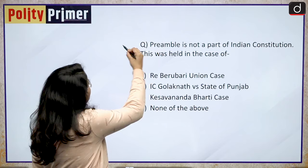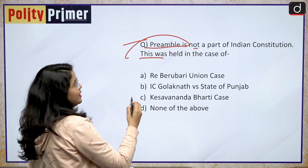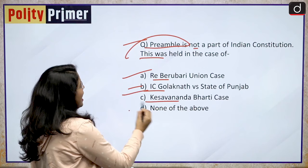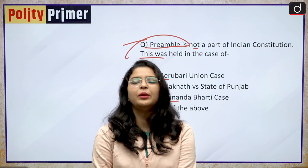Let us discuss one more question. The question is: 'Preamble is not a part of the Indian Constitution' — this was held in the case of which of the following? Option A: Re Berubari Union case. Option B: I.C. Golaknath versus State of Punjab case. Option C: Kesavananda Bharati case. Option D: None of the above cases. Kindly drop your answers in the comment box below.